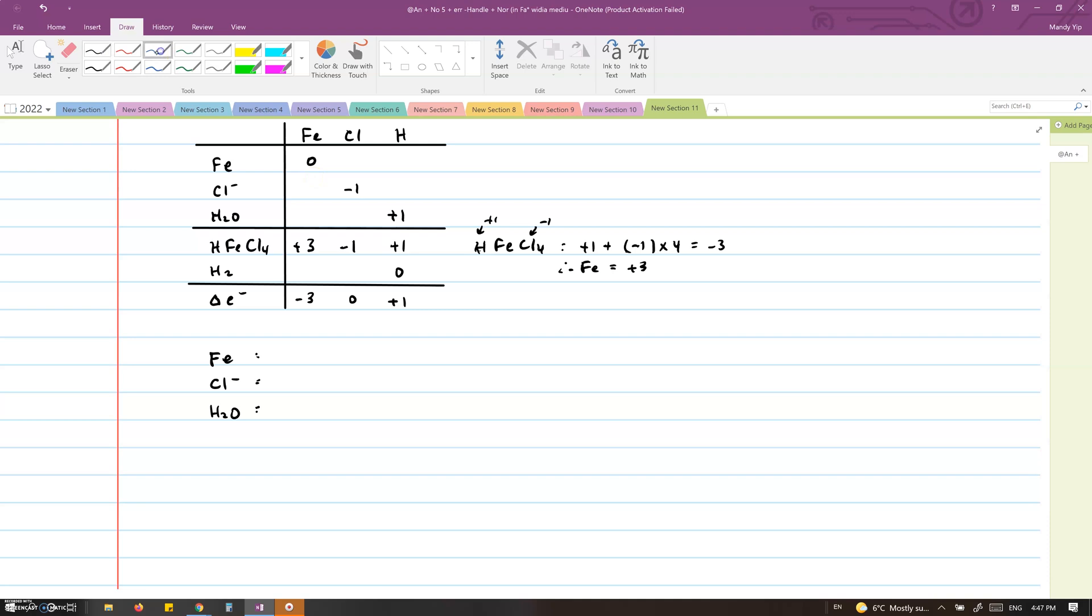Once we have filled out the rest of the table and the change in the electrons for each element, we will rewrite the reactants, including water, and write out the total change in the number of electrons for each reactant. Then we will write down the full equation again. Remember that in order to balance the number of electrons given away and received by the reducer and the oxidizer, we will swap these numbers and write them as the coefficient of the other compound. So we will have 3H2O and 2Fe.